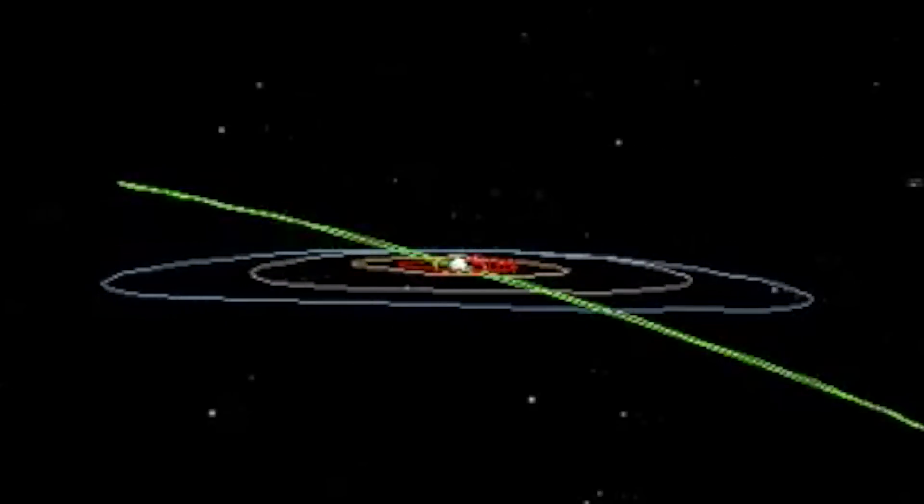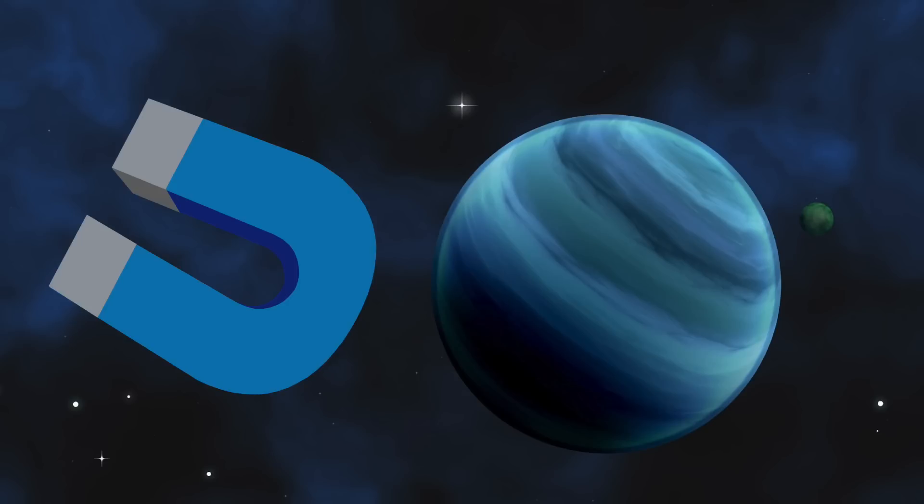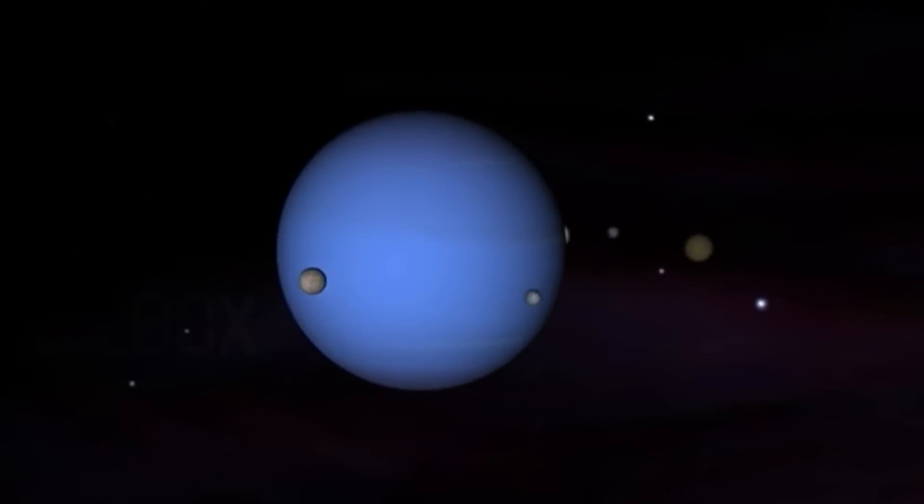Though the two planets share a bit of orbital space, Pluto is never subject to Neptune's gravitational pull, as the two planets don't actually physically cross one another, despite the crisscrossing orbital pattern.